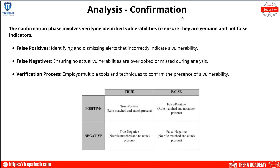We're going to have to look at the scanning flags. Is this a false positive? Is it a false negative? Is it a true positive or a true negative? A true positive means a rule was matched and the attack is present. A false positive means the rule matched but no attack is present — the systems thought based on their heuristic or behavior analysis that there was an anomaly, but there wasn't.